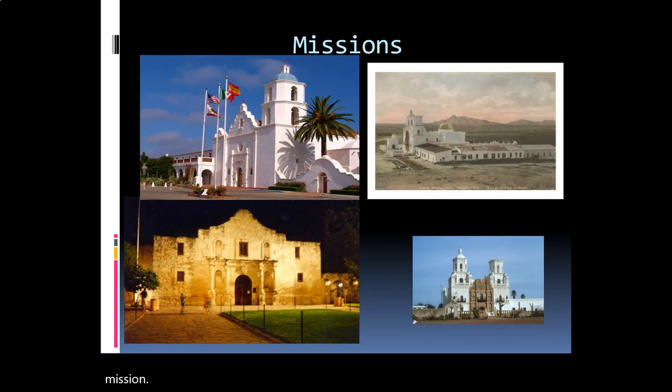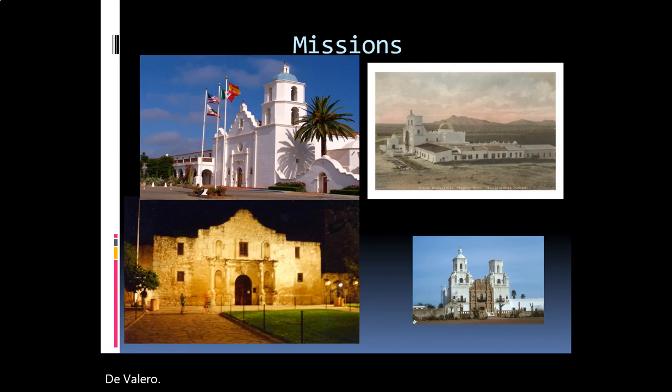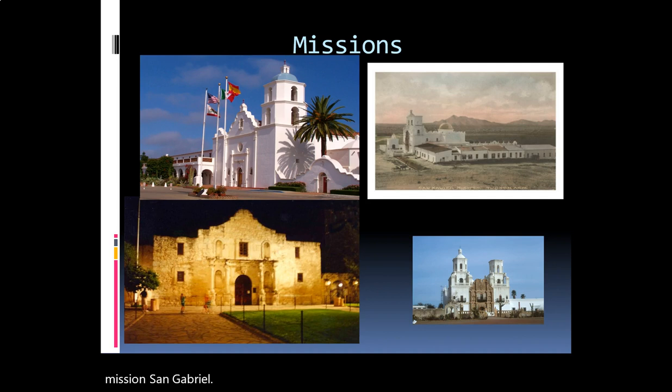Here are pictures of some of these missions. The first, on the top left, is Mission San Luis Rey de Francia here in Oceanside. On the bottom left is Mission San Antonio de Valero, also known as the Alamo. On the right — both top and bottom — is Mission San Gabriel San Javier, located near Tucson near the Tohono O'odham community, close to the border with Mexico today.